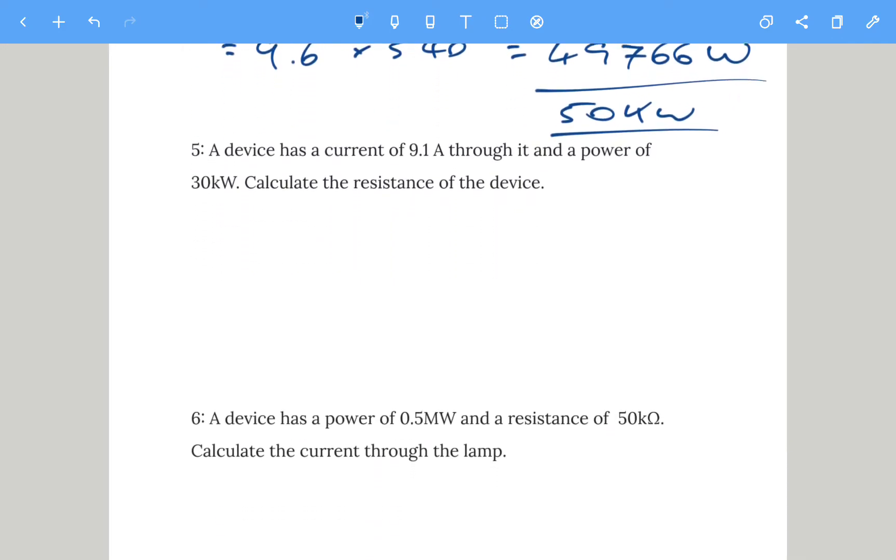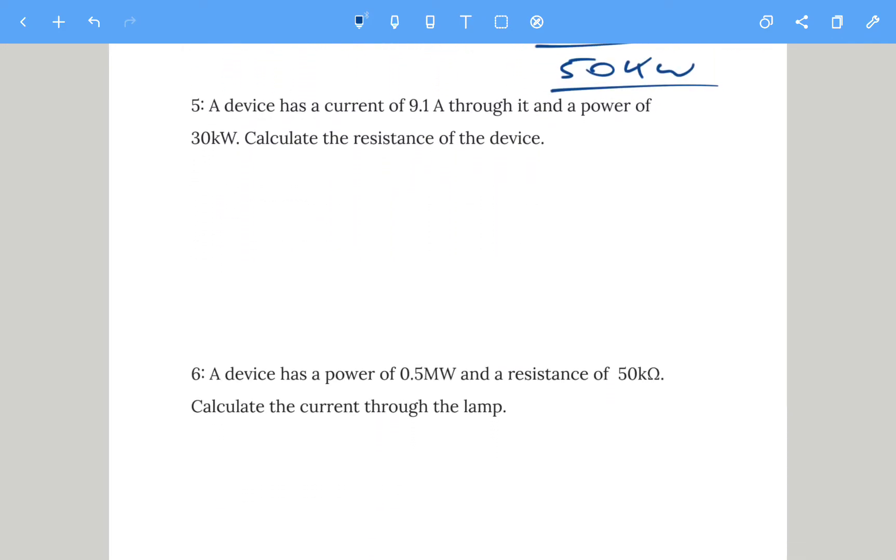Let's look at number 5 before we do number 6. The device has a current of 9.1 amps through it and a power of 30 kW, so that means kilowatts. That's 30,000 times by 1,000. This time we need to calculate the resistance.